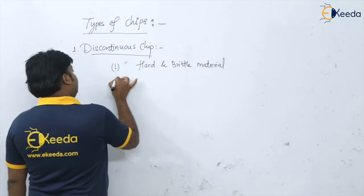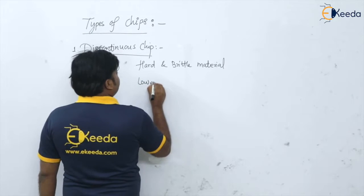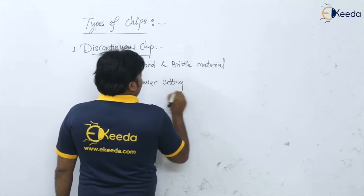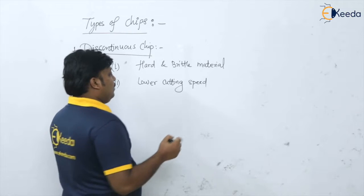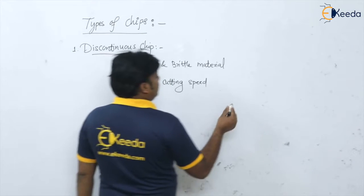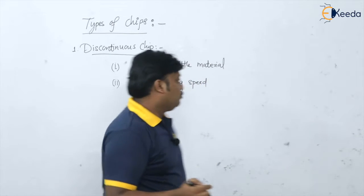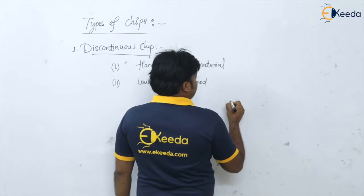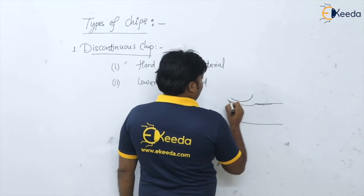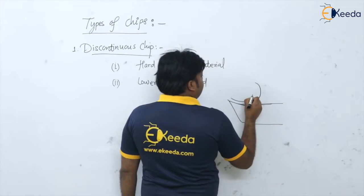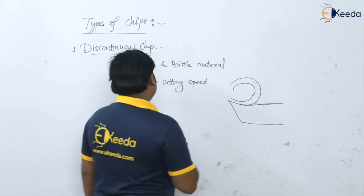The second important factor that will affect the discontinuous chip is the lower cutting speed. What will happen if we are having the low cutting speed in the operation? Because of this low cutting speed, the time required for the chip to get curled onto the rake face will be maximum. If the time is more for curling — say this is the rake face of the tool and this is the chip — as the cutting speed is lower, the time for curling will be maximum, so the chip can be curled to the minimum radius.